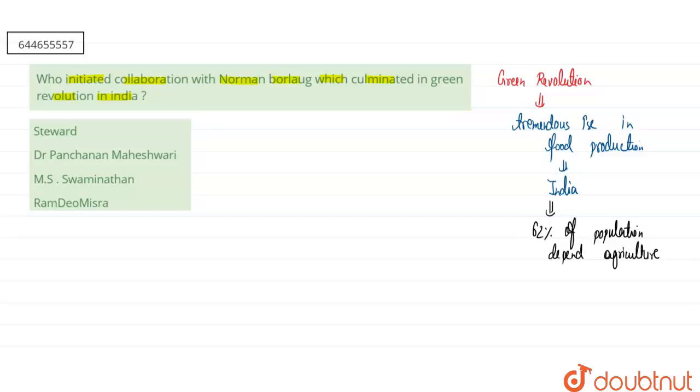It was initiated by MS Swaminathan in India. They are also called the father of Green Revolution in India. They introduced the Mexican variety of wheat in India. It started from introducing the Mexican variety of wheat.